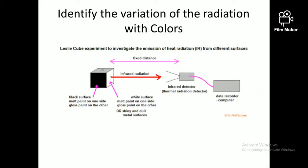Therefore, from the first two experiments, we realize that dark colors emit thermal radiation faster than bright colors. That is the first conclusion from these experiments.